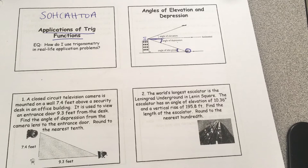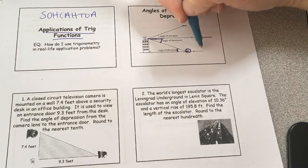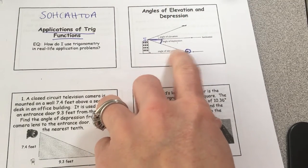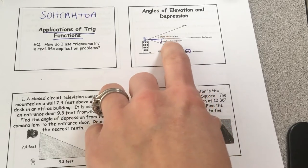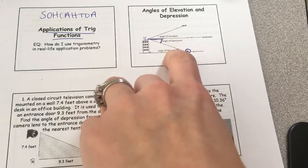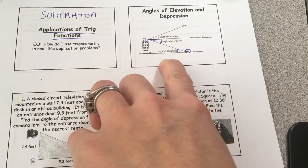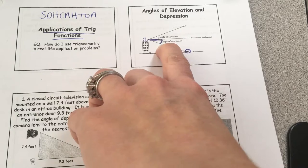The biggest mistake students make is putting the angle of depression inside the triangle. If the angle of elevation is 40 degrees, the angle of depression would also be 40 — they are alternate interior angles. So the angle of elevation and the angle of depression are congruent, but they mean two different things: elevation is looking up, depression is looking down.